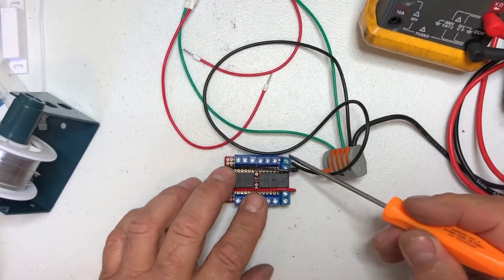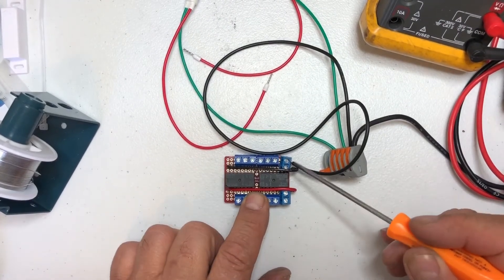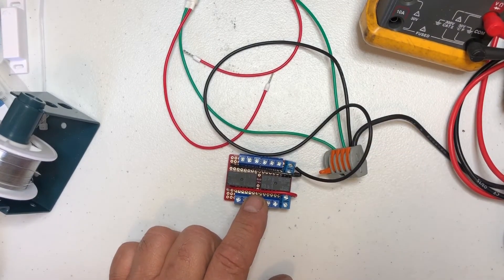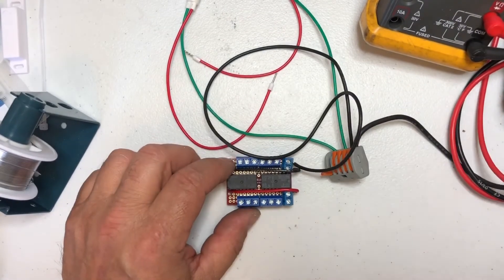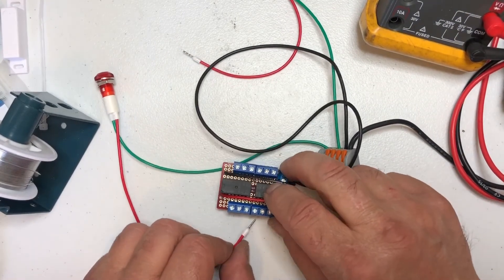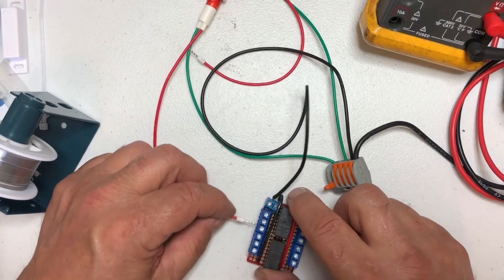And so it's going to feed negative across to here and then negative across to here. So we're feeding the coils on those with the negative. What we'll do is we'll put an LED light here.